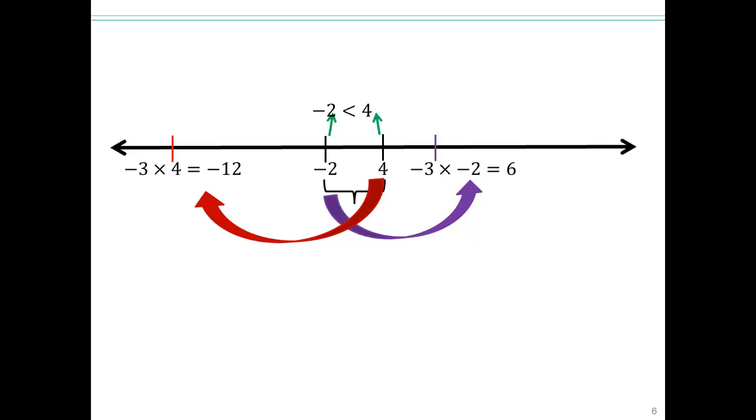What just happened there? Let's do it again. Look at that. Negative 2 times negative 3 is 6. So instead of negative 2 going left, it went to the right. And 4 times negative 3 is negative 12, and it went to the left instead of going to the right. So watch again. Look at that.